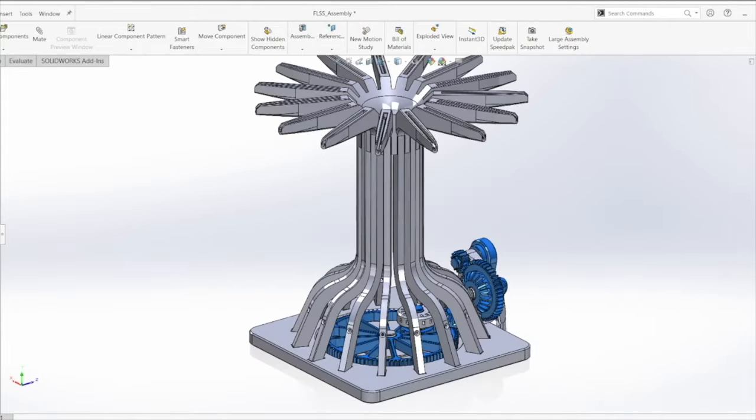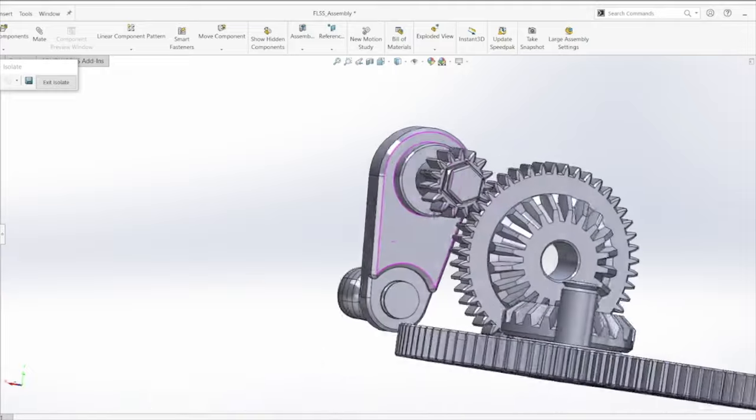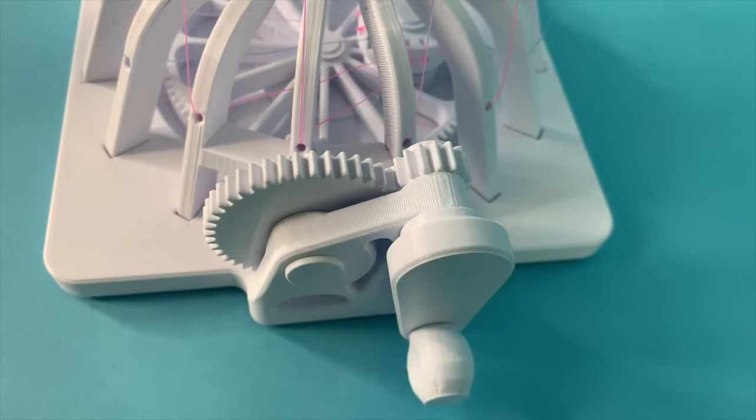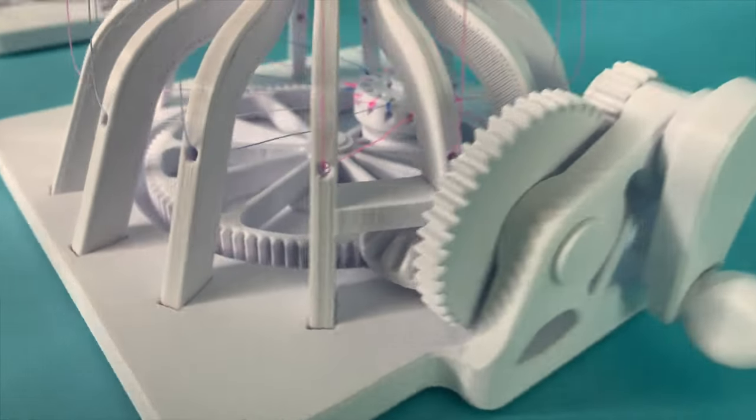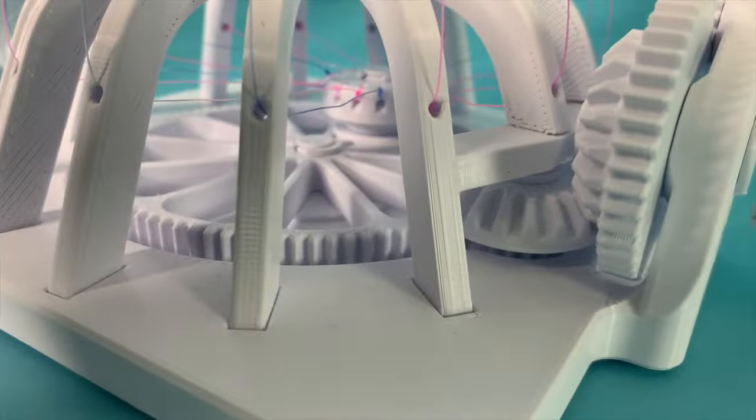You can see from the first iteration of this sculpture that I originally had an extra gear on the crank side. This increased the gear ratio to 20 to 1, making the resulting motion much slower.